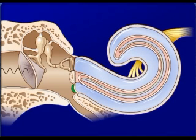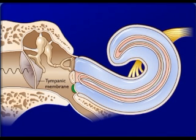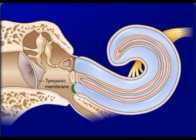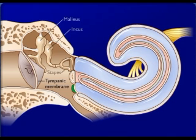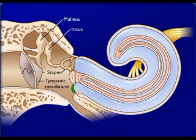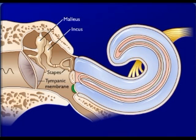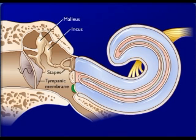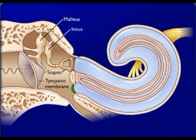Sound waves strike the tympanic membrane and cause it to vibrate. Vibration of the tympanic membrane causes the three bones of the middle ear to vibrate. The footplate of the stapes vibrates in the oval window.